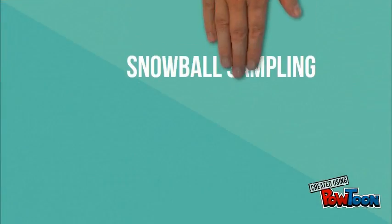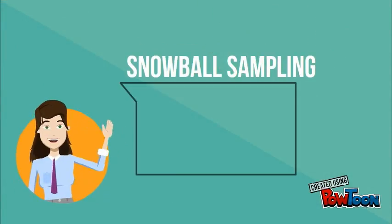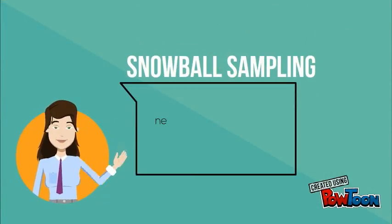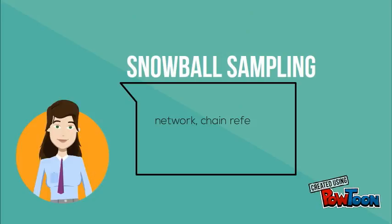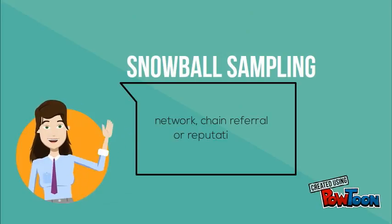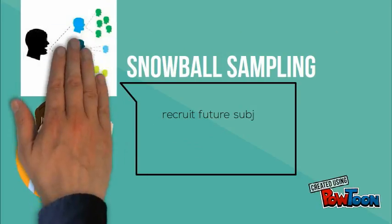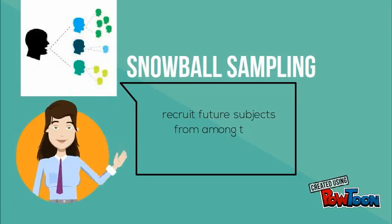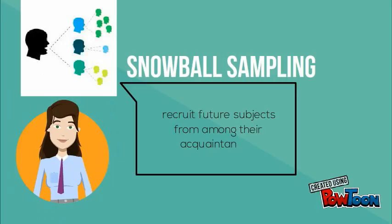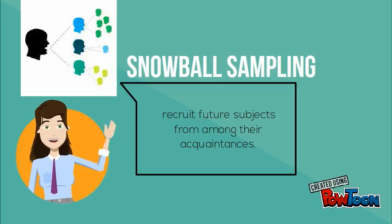The last one is snowball sampling. This sampling technique is also known as network, chain referral, or reputational sampling. Researchers use existing study subjects to recruit future subjects from among their acquaintances, which means the researchers will ask for help from the current subject to identify people with similar traits of interest.